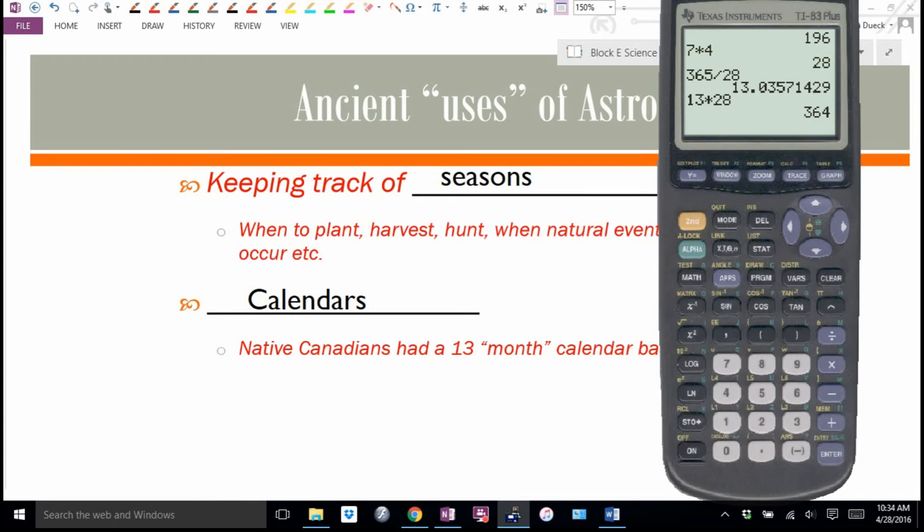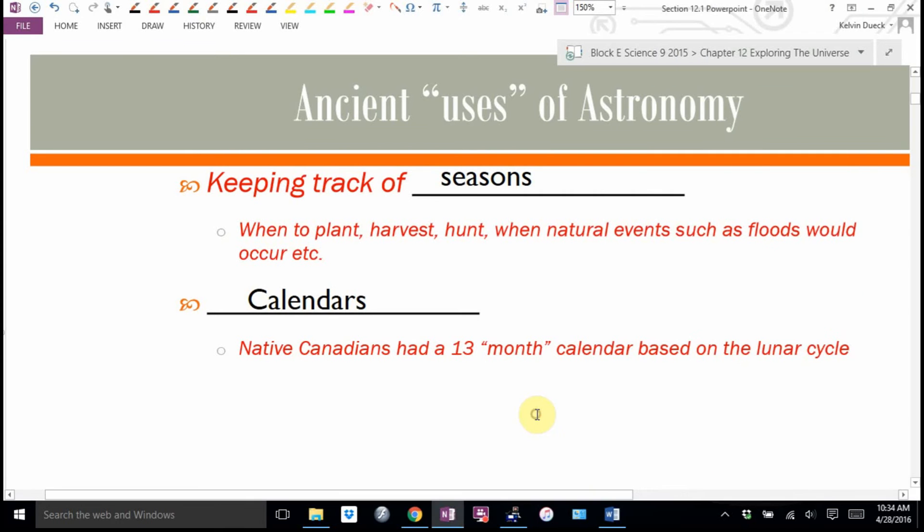It'd be kind of handy because if you wanted to know five years from now on July 16th, what day of the month is it? You could calculate it very easily because the first is a Monday. I kind of think we should go to a 13-month calendar, 28 days each. So native Canadians had a 13-month calendar based on the lunar cycle because the moon waxes and goes from full moon to new moon every 28 days.